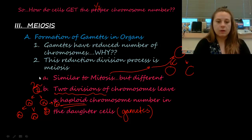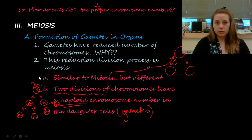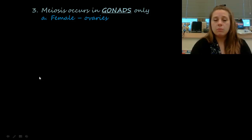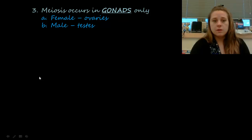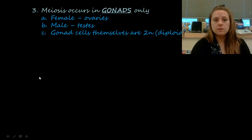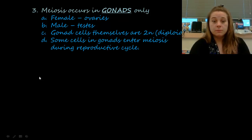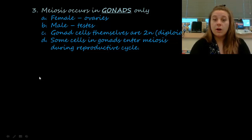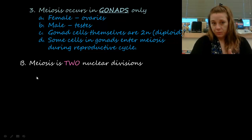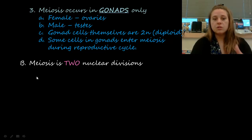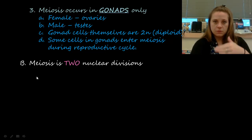Meiosis only occurs in the gonads — the reproductive organs. In females that's the ovaries; in males those are the testes. The gonad cells, those initial cells, are diploid. Some of those cells are going to be responsible for entering meiosis — they're the only cells in our body that do this. So to recap: meiosis is a reduction process of chromosomes, and it's a two-step, two-division process.